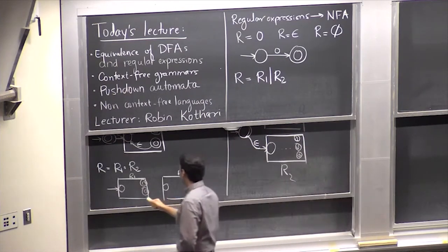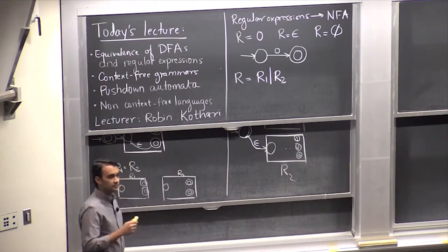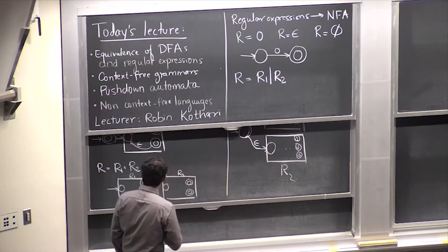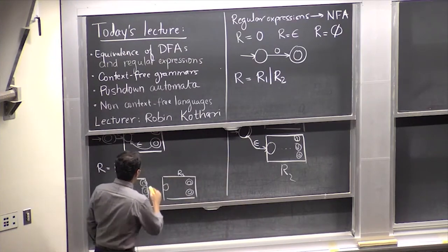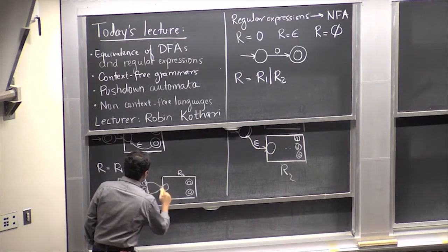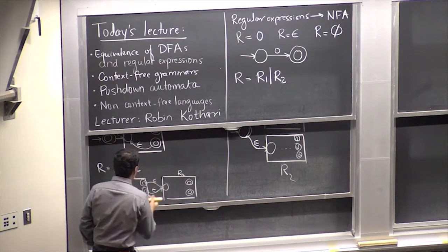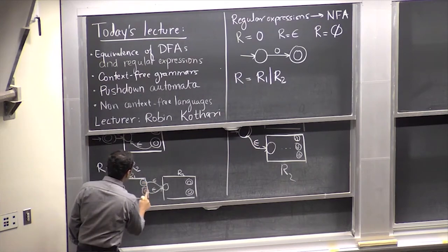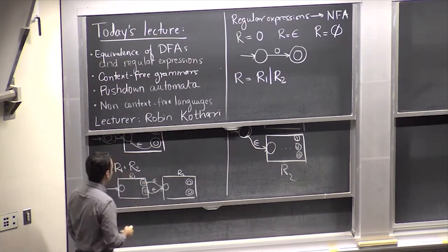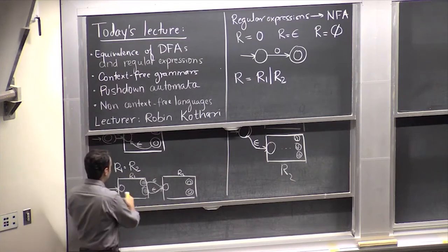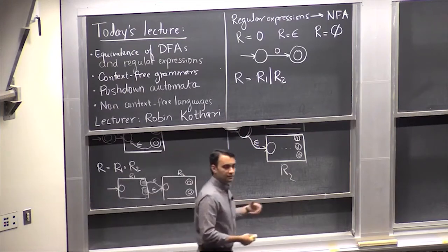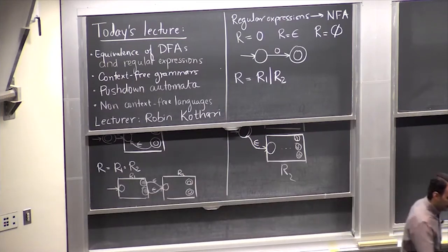How do we accept strings where the first part is in R1 and the second part is in R2? You link the accept states from R1 to the start state of R2 — with epsilon transitions. Then we don't want R1's states to be accept states anymore, because otherwise you would accept strings that are just in R1. So get rid of the acceptance here, and now the NFA accepts something in R1 first, then transitions to R2. R2's states remain accept states.